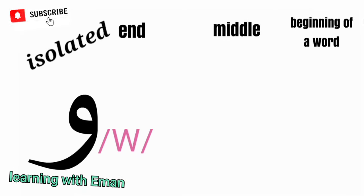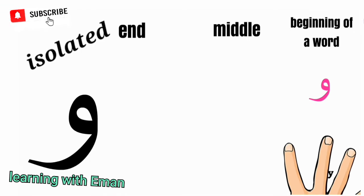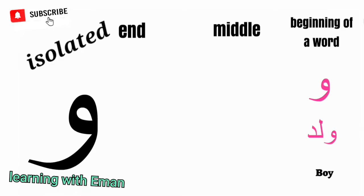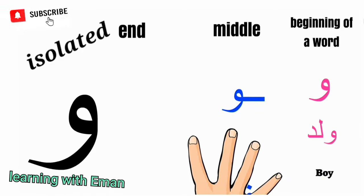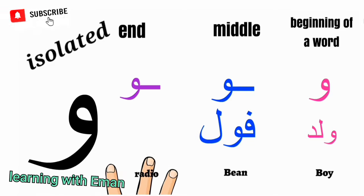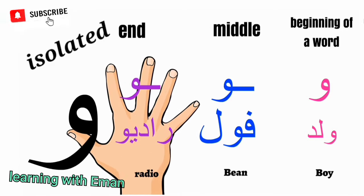The next letter of the Arabic alphabet is Wow. Wow is equivalent to the English letter W. At the beginning of a word, like 'Walid', meaning boy. At the middle of a word, like 'Fool', meaning bean. At the end of a word, like 'Radio', meaning radio.